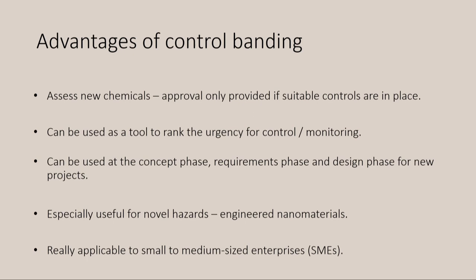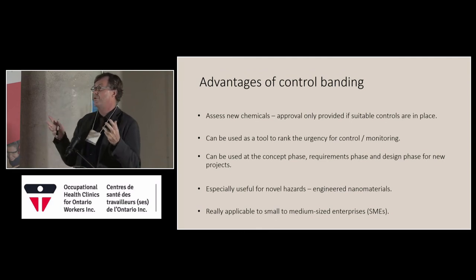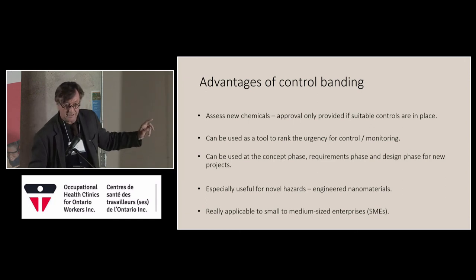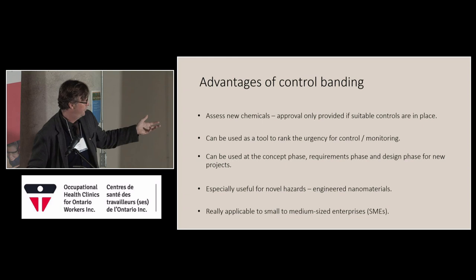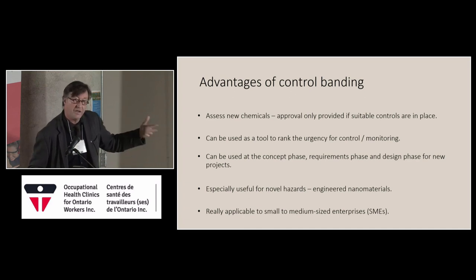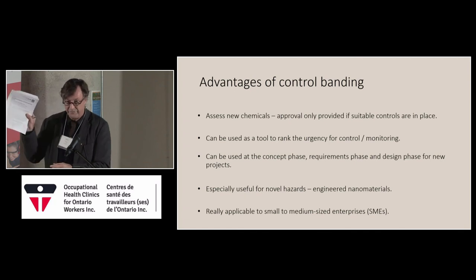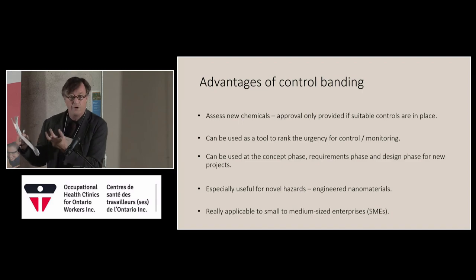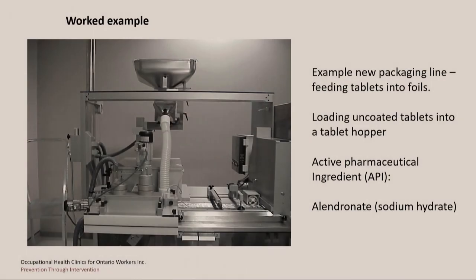Control banding is a great way to figure out whether you've got the controls in place, and can rank the priority for controls. It can even be used at the concept phase of a new project — before a machine is built, you can figure out what controls are required before the machine is put in place. There's also a new paper with David Zork's name on it: a quantitative validation of the control banding nano tool. As an example, about 15 to 20 years ago an engineer asked me what controls to put on a packaging line where a hopper was feeding in uncoated tablets. I took the process through the COSHH algorithm, took information from the safety data sheet, and assessed transferring one active pharmaceutical ingredient — sodium elendronate.